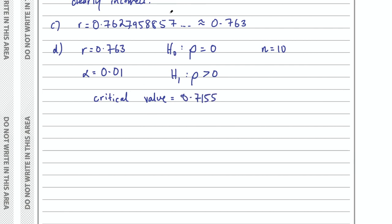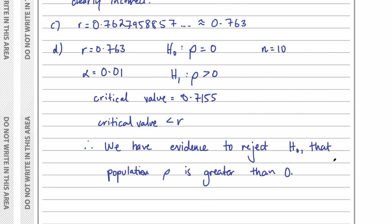Our critical value is 0.7155 and our R is 0.763. R is bigger than the critical value. This number means you need an R greater than 0.7155 to support your alternate hypothesis. If R is less than 0.7155, it's too low to say there's a correlation. Since our R is greater, we have evidence to reject the null hypothesis — the population rho is greater than 0. That was part D.